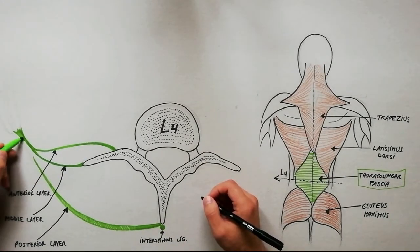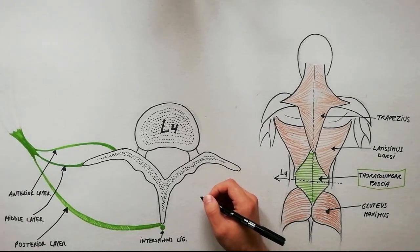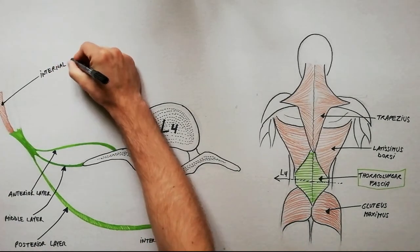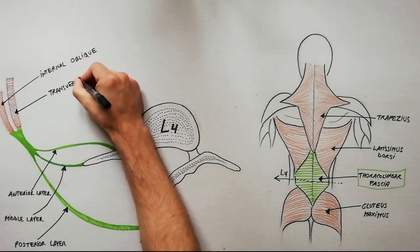The three layers fuse laterally to form a dense aponeurotic sheath, which gives origin to the internal oblique and transversus abdominis muscles.